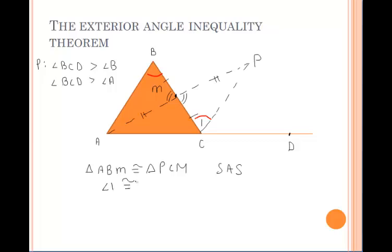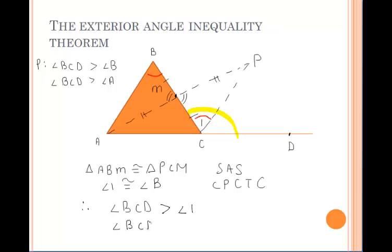Looking at the diagram, we can then say that that entire exterior angle BCD must be greater than the measure of angle 1, because angle 1 is inside of that angle — so angle 1 must be smaller than angle BCD. But since angle 1 is congruent to angle B, we can use the substitution property to then say that angle BCD must be greater than angle B, which is one of our remote interior angles.